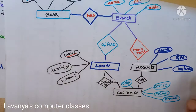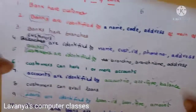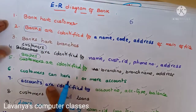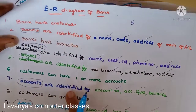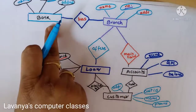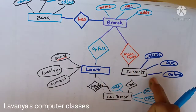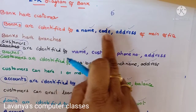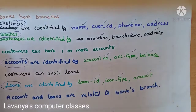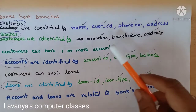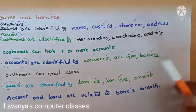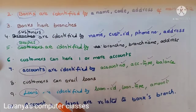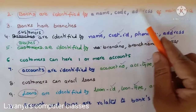This is the ER diagram for the bank example. We thoroughly read the description and identified five entity sets: bank, customer, branches, accounts, and loans — each with their respective attributes. We then identified the relationships between entity sets and drew the complete ER diagram.